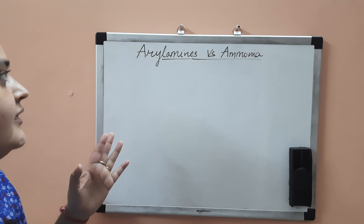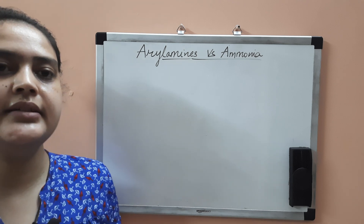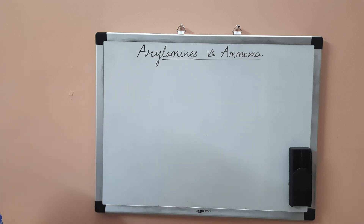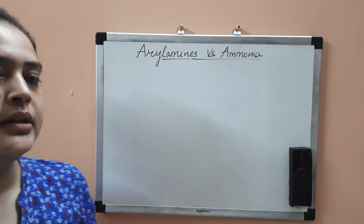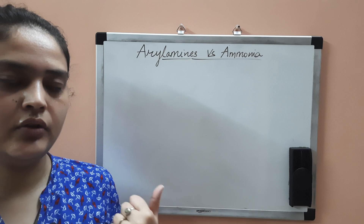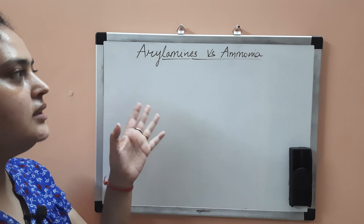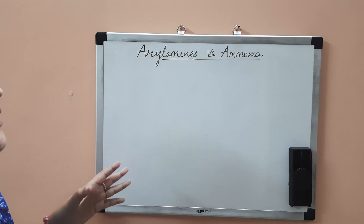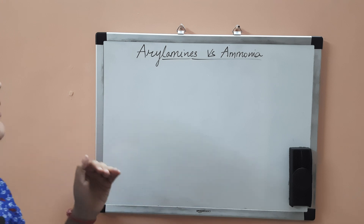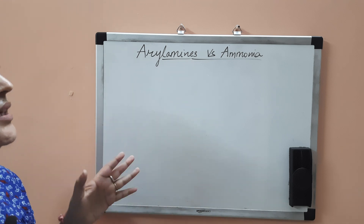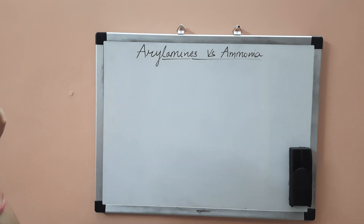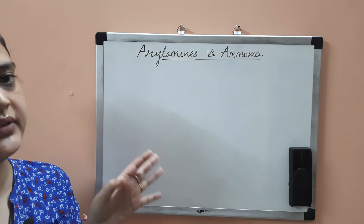Today we will learn about the structure-basicity relationship of aryl amines and ammonia. In aryl amines, the amine is attached to a benzene ring, so the lone pair of electrons on the nitrogen atom is in conjugation with the benzene ring. Hence, it is less available for protonation, so their basicity decreases and their pKb value is very high, meaning basicity is very low.